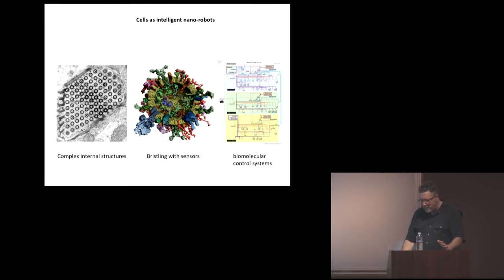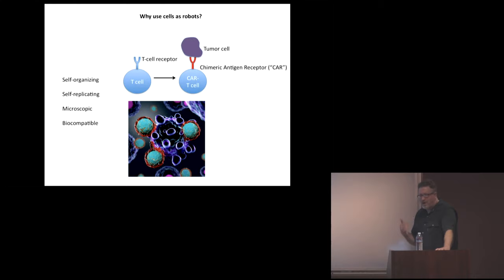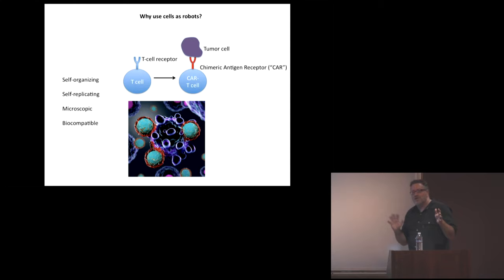We would like to pursue the idea of viewing the cell as a robot. One reason is that there may be real applications in which you'd reprogram a cell to do something you want. A popular approach in immunotherapy is to take immune cells and add a few extra sensors to make that cell attack a tumor — the so-called CAR T cells. People are becoming very sophisticated at this, adding multiple sensors and logic that allows the cell to integrate those sensors.